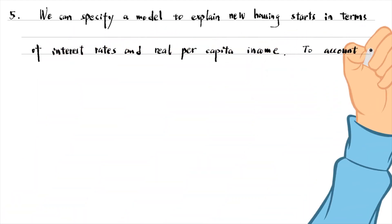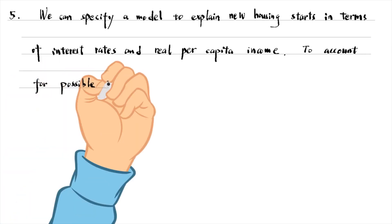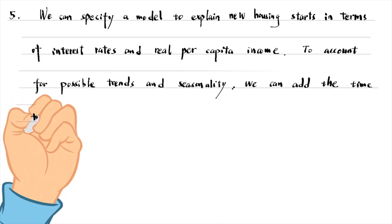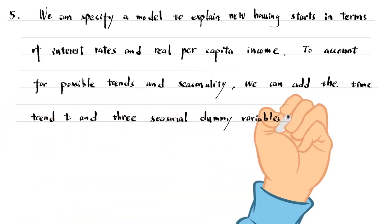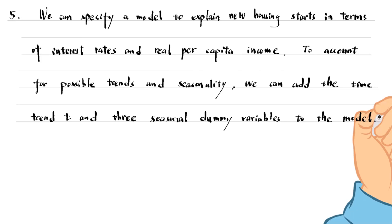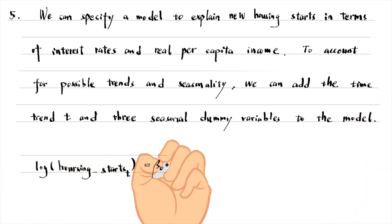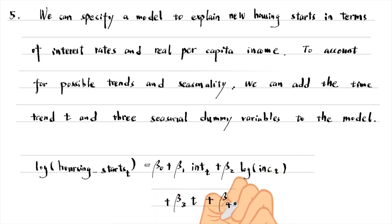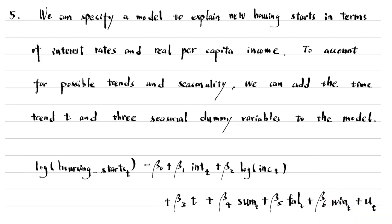To account for possible trends and seasonality, we can add the time trend t and three seasonal dummy variables — summer, fall, and winter — to the model. In this model, spring is the base season. The coefficient beta3 captures the time trend and the coefficients beta4, beta5, and beta6 capture the seasonal patterns.